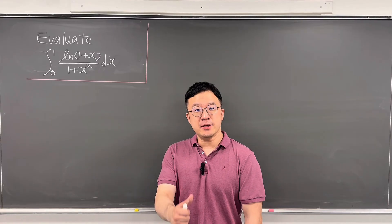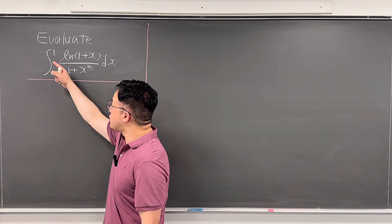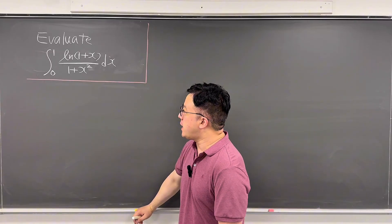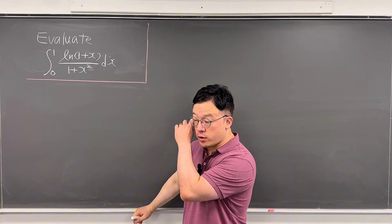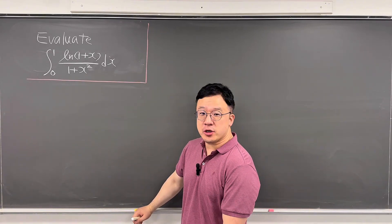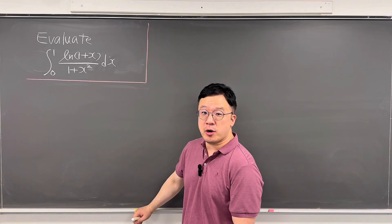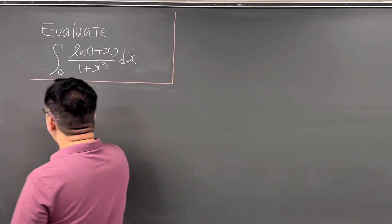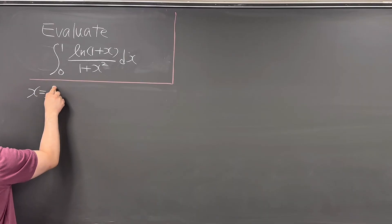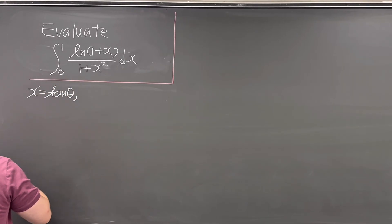Okay, here's the question. The question is to evaluate this integral from 0 to 1 of ln of 1 plus x over 1 plus x squared dx. I'll be using trigonometric substitution and King's property. So let me just call x as tangent theta.